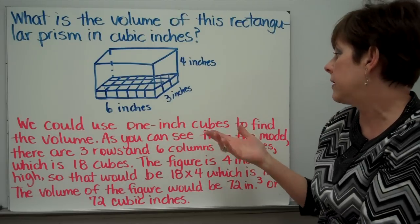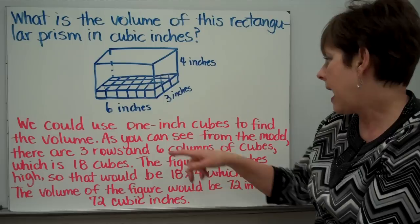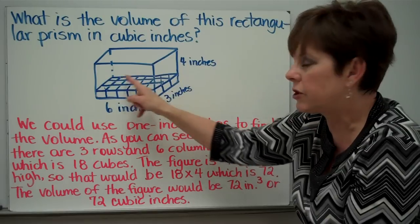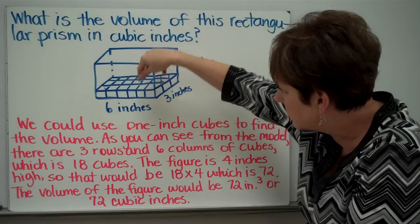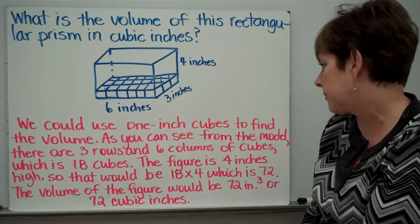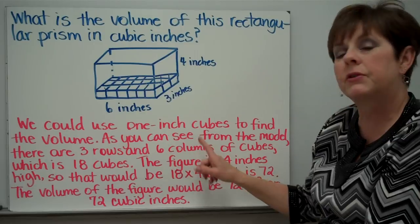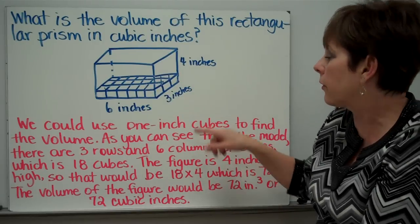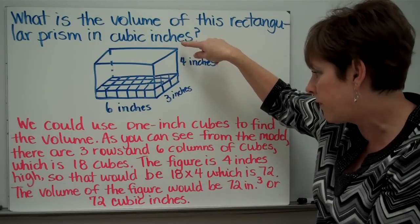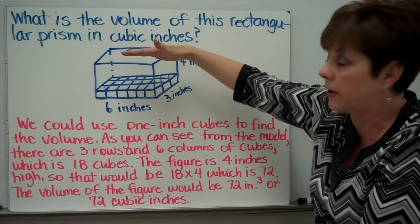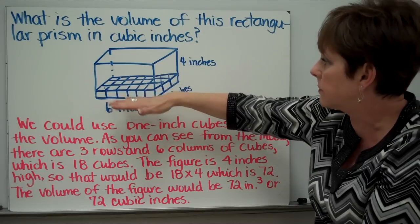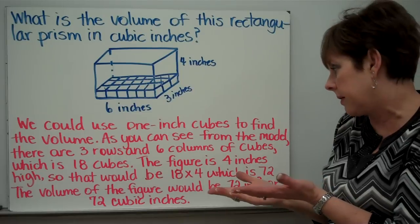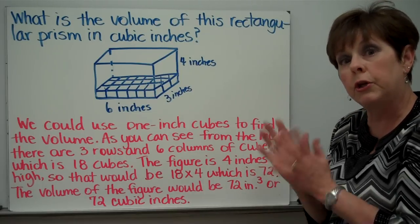We could use one inch cubes to find out what the volume is. As you can see from this model, there are three rows that show the width. There are six columns of cubes that show the length. And so six times three is eighteen. So this whole first layer here is eighteen cubes. The figure is four inches tall, four inches high. So if I wanted to find out how many cubes total there would be, I could say eighteen times four. There would be four layers. And that would be seventy-two.